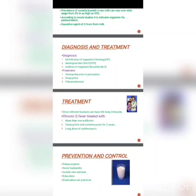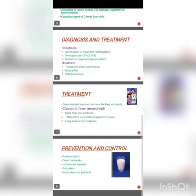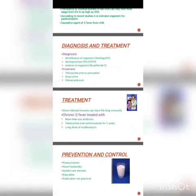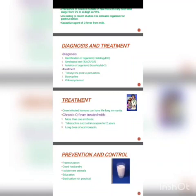Treatment involves use of major antibiotics including tetracycline as a primary treatment, or use of doxycycline or chloramphenicol. Doxycycline is also a type of tetracycline antibiotic. Treatment also involves a long course of erythromycin, or a combination of tetracycline and cotrimoxazole for 2 years. Once a person is infected from Q fever, they can have lifelong immunity against this bacteria.